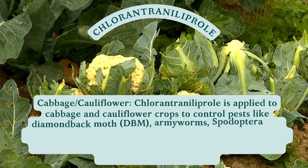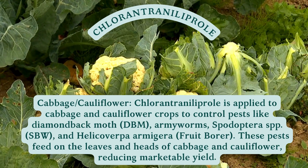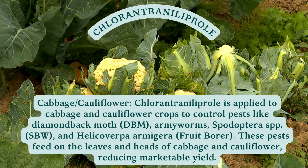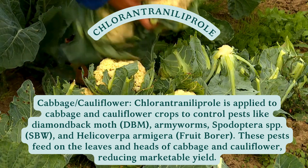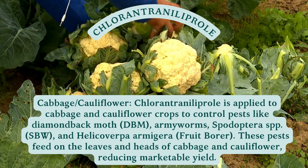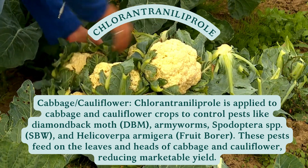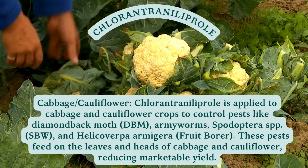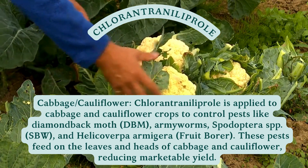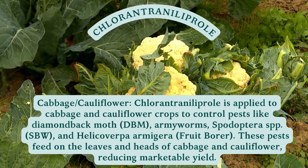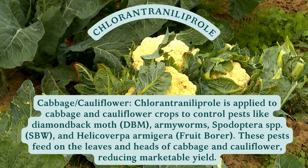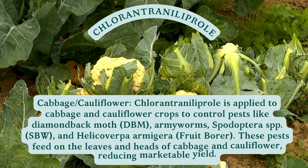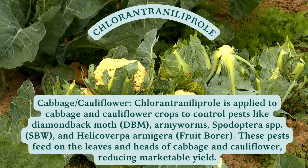Cabbage and cauliflower: Chlorantraniliprole is applied to cabbage and cauliflower crops to control pests like diamondback moth (DBM), armyworms (Spodoptera spp.), and Helicoverpa armigera fruit borer. These pests feed on the leaves and heads of cabbage and cauliflower, reducing marketable yield.